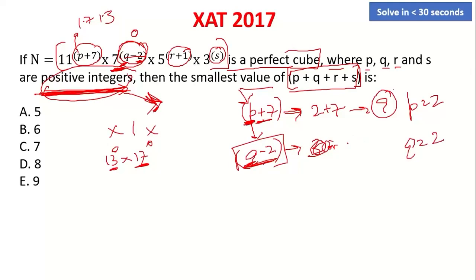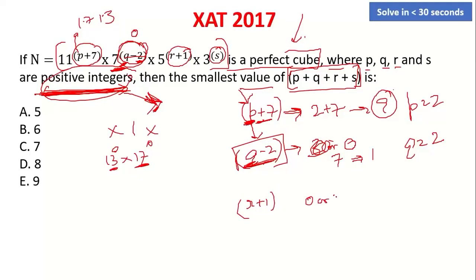In that case, 2 minus 2 becomes 0, the power becomes 0, and 7 raised to 0 equals 1 — still a perfect cube. Next, 5 is raised to the power r plus 1. So r plus 1 must be 0, or 3, or a multiple of 3, and r must be a positive integer. Can r be 1? Then r plus 1 equals 2 — not a multiple of 3. Can r be 2? Then r plus 1 equals 3 — yes! So r equals 2.